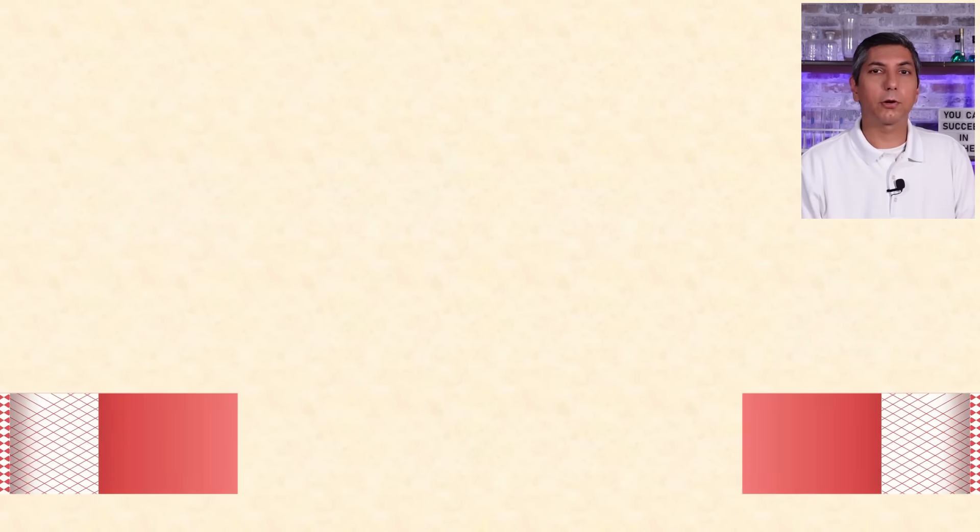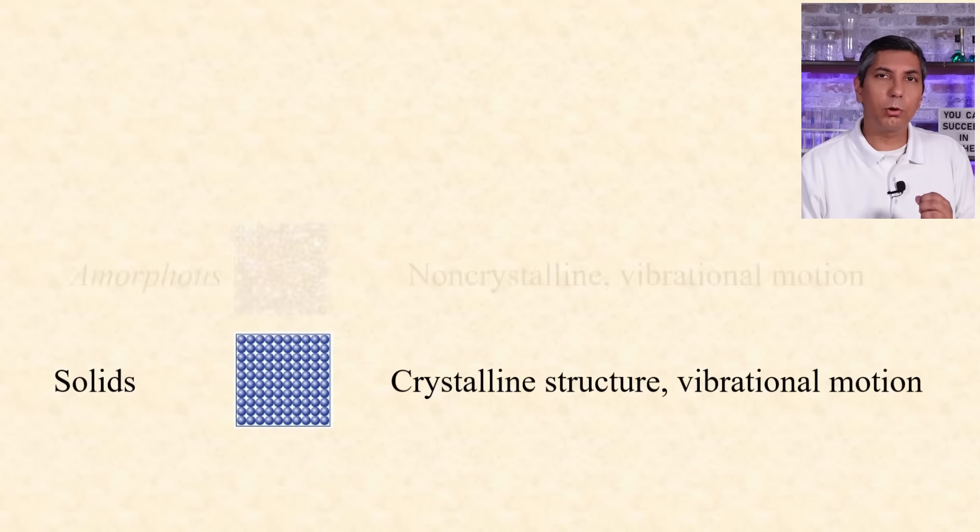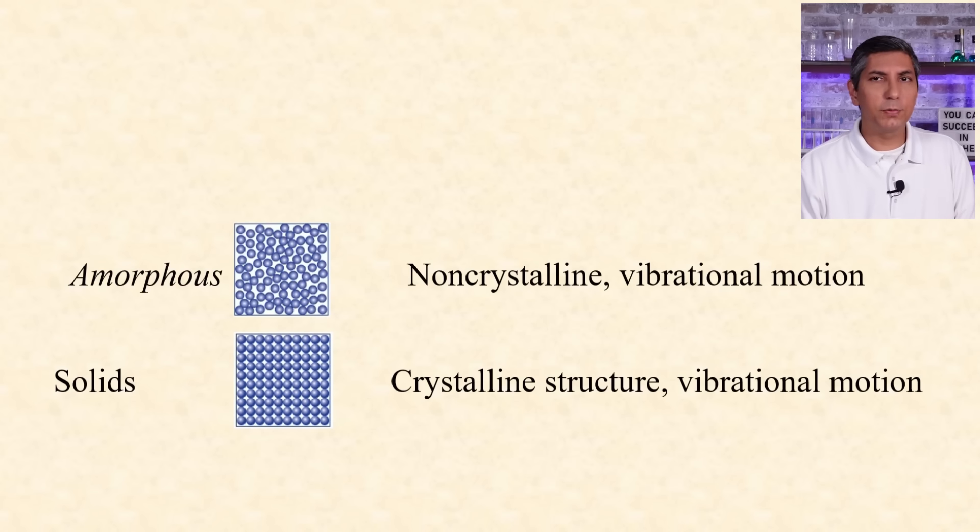True solids are crystalline in structure. Some solids are not completely crystalline. We call these amorphous solids. These include materials like plastics and other semi-solid materials with a non-crystalline structure.